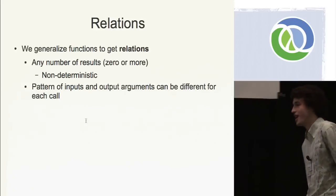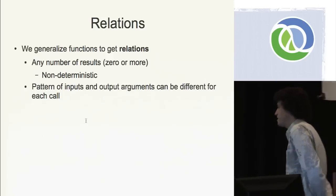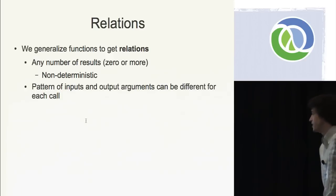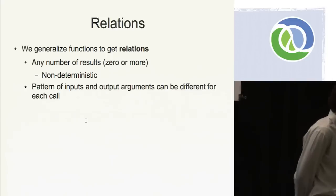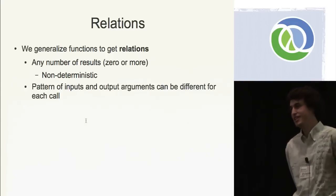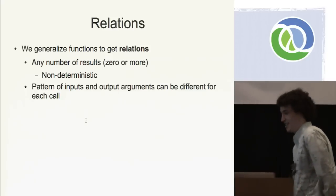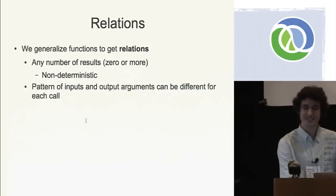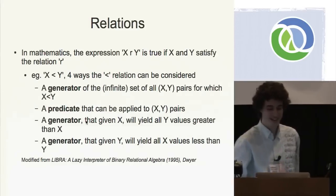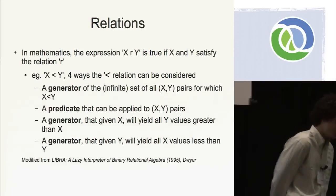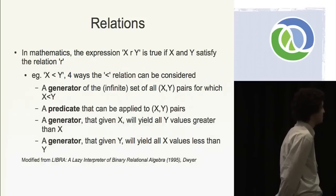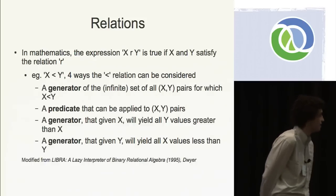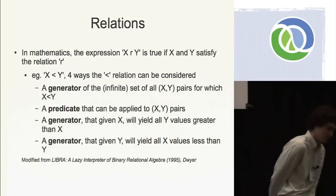We're not always returning one result — we don't really know how many results a relation will return. And the pattern of input and output arguments for a relation can be different for each call. The parameters are no longer just for input; they're also for output. In mathematics, the expression X or Y is true if X and Y satisfy the relation R. Take X is less than Y. There are four ways this less-than relation can be considered.